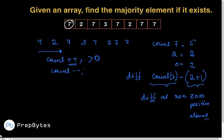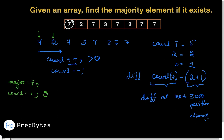Let's walk through [7, 2, 7, 3, 7, 2, 7]. We start: major = 7, count = 1. We see 2, which is not 7, so count becomes 0. Since count is 0, we update major to 2, count = 1. We see 7, not 2, so count becomes 0. We update major to 7, count = 1. We see 3, not 7, count becomes 0. We update major to 7, count = 1.